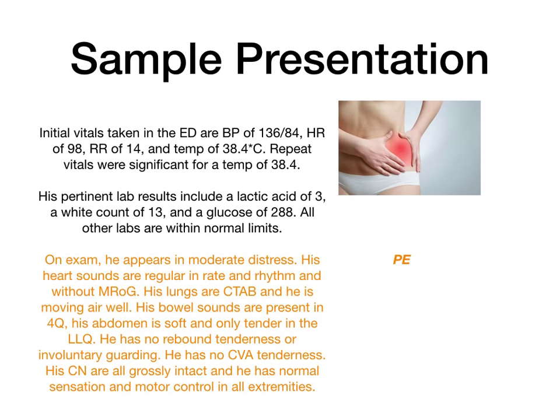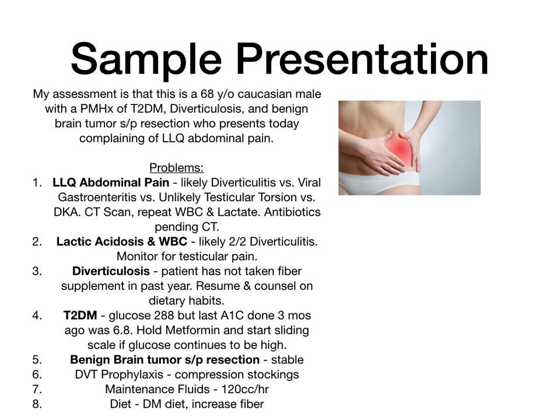For maintenance fluids, use the 4-2-1 rule — so for this 80 kilogram patient, 120 cc's per hour of normal saline. And then diet — always talk about what diet they're going to be on. If they're diabetic, they need a diabetic diet. If they have celiac, gluten-free. If they're presenting with something where they can't eat — like a bowel obstruction or pancreatitis — you say NPO. I commented that we should increase his fiber.